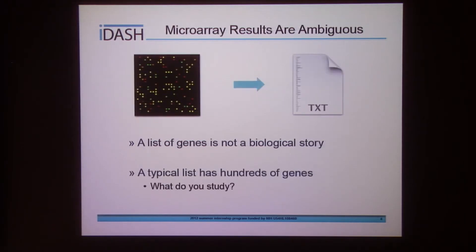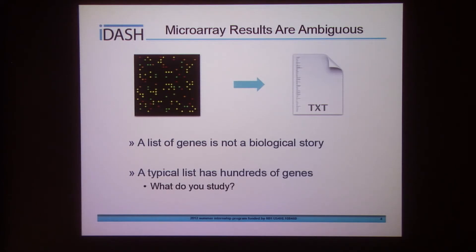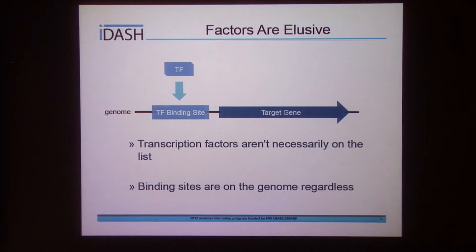Transcription factor binding sites can link the gene expression data to the biological explanations that we want. Say you're a biologist performing a microarray experiment. You get some expression data out of it, you filter by fold change, and now you have a text file full of a list of genes. Well, a list of genes isn't really a biological story — it's just a list. And the typical gene list that comes out of this sort of microarray experiment is hundreds of genes long. So you have to ask yourself, what am I going to spend all that time and money looking at?